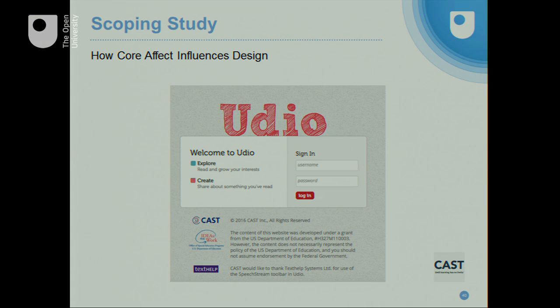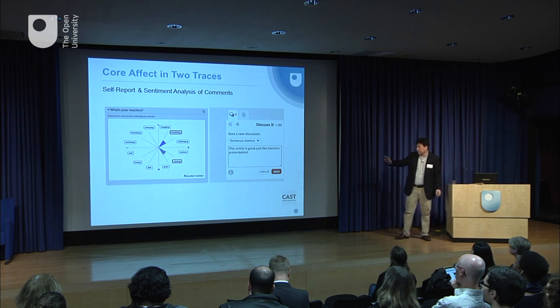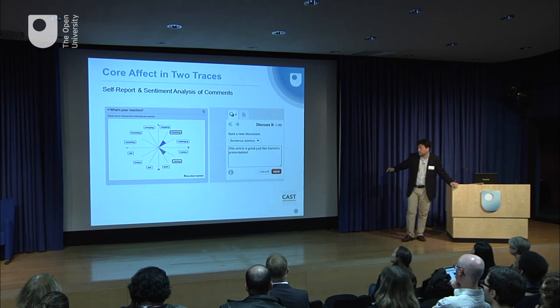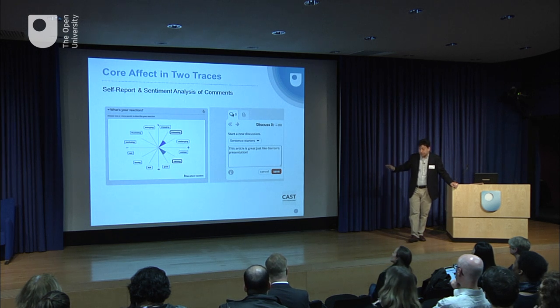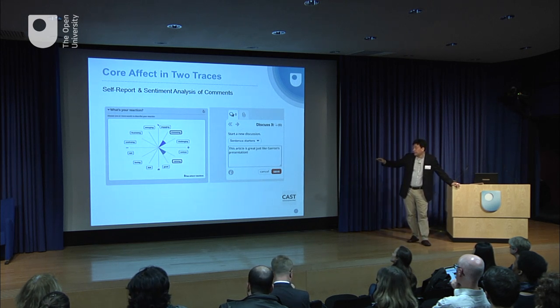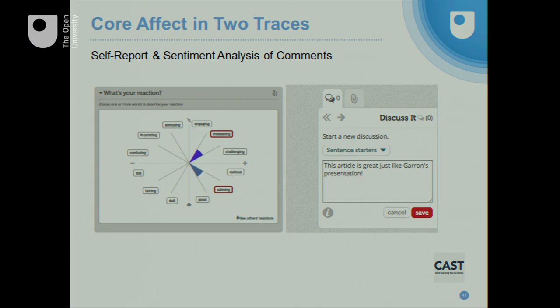I wanted to give an example of what research design looks like when leveraging core affect to measure learners' emotions. Before I came here, I was working at CAST on a Department of Education Office of Special Education Policy five-year, $10 million research project called UDO, where the idea was to model core affective measurement of emotions. You can see on the left a design for self-report where we worked with 6th, 7th, and 8th graders in North America — a pilot study with 353 students.